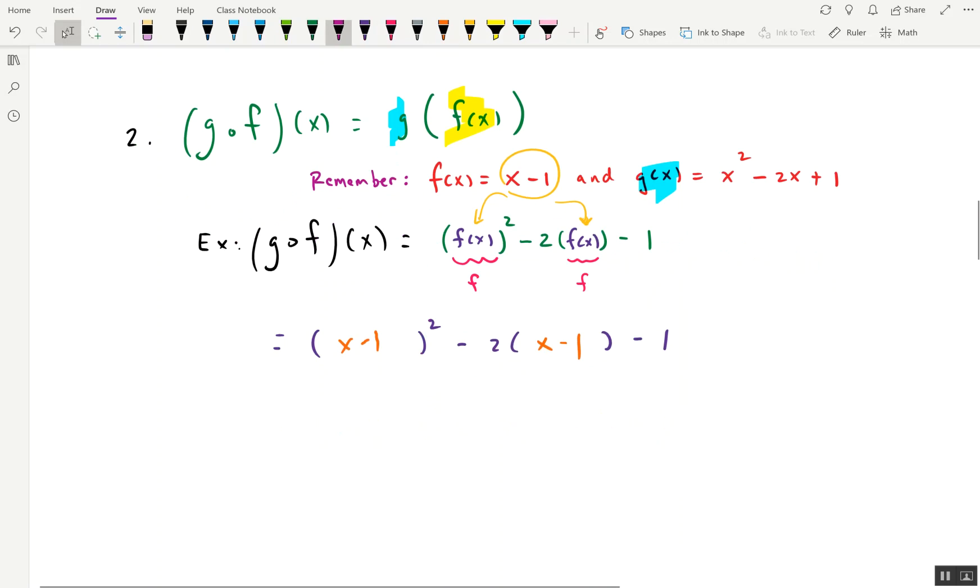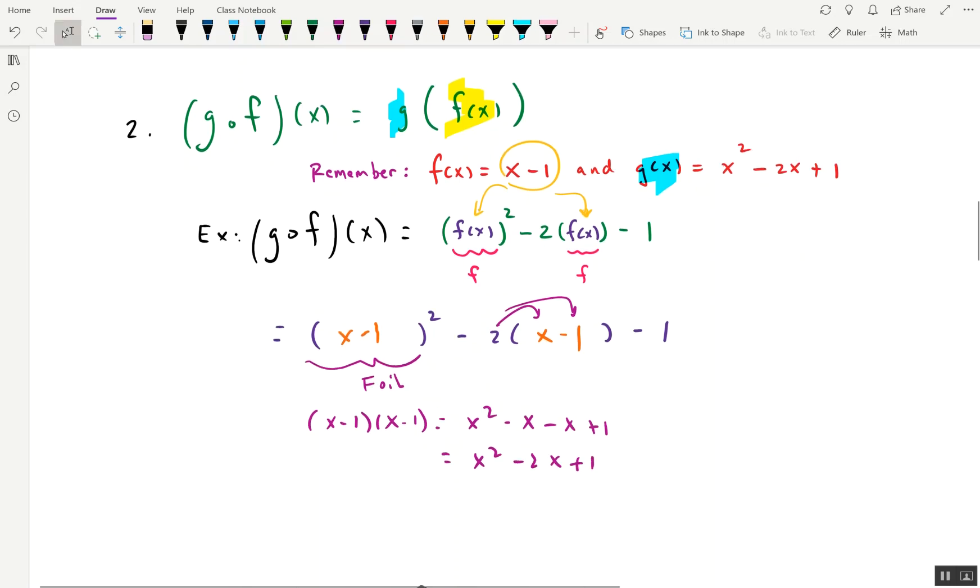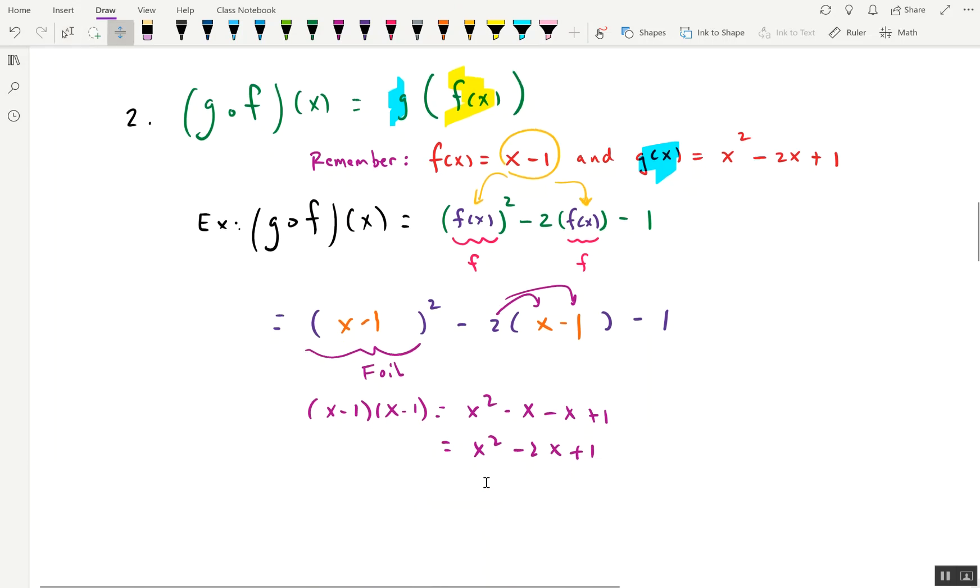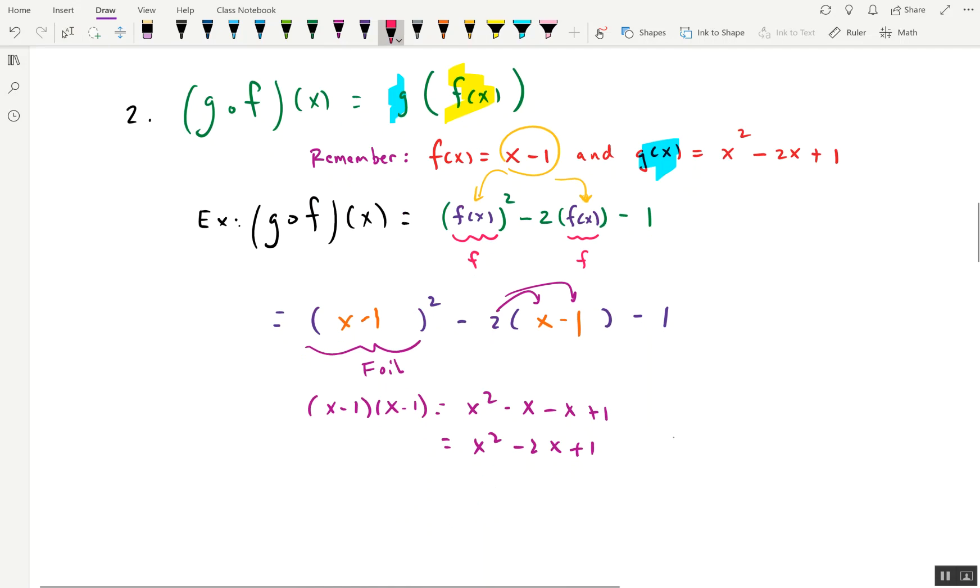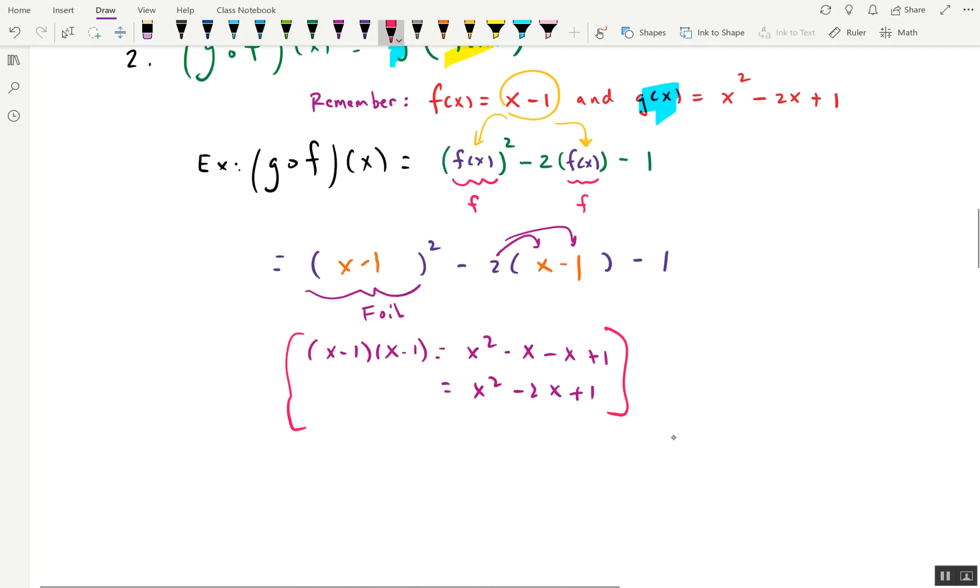When we compute x minus one squared, this is a foiling problem. And this is just a distribution problem. x minus one times x minus one gives us x squared minus two x plus one. And if we want to do that with more steps, we would say minus x minus one, and that gives us negative two x plus one. That's a little aside. I need a little bit more room down here. So here's a little aside. Now we know because that is right here.